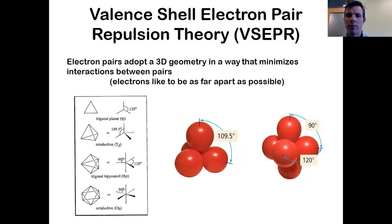The model that we use to describe that is called VSEPR, valence shell electron pair repulsion theory. Here's the basic premise of VSEPR. It says electrons like to be as far apart as possible. In other words, electrons adopt a 3D geometry in a way that minimizes the interactions between pairs.